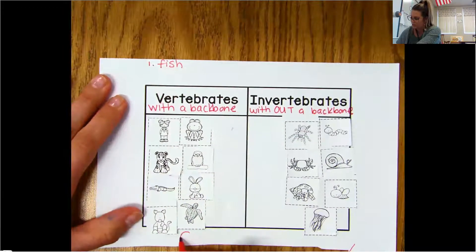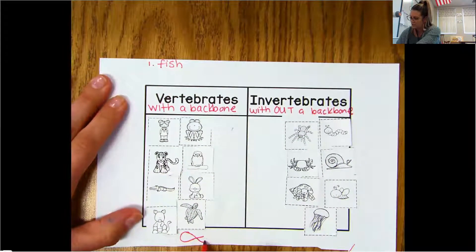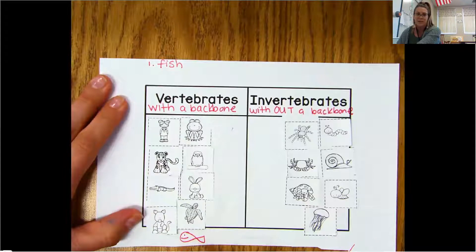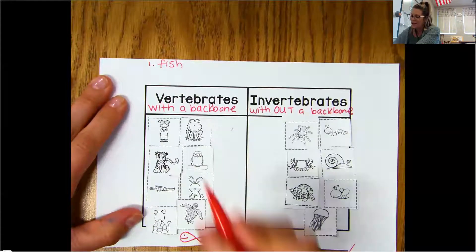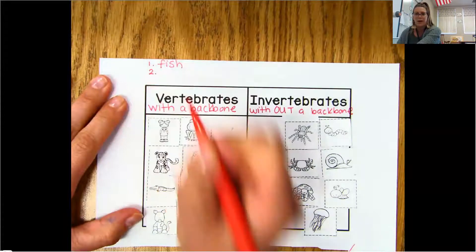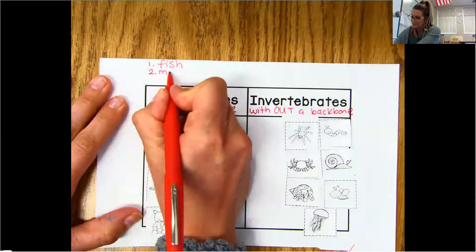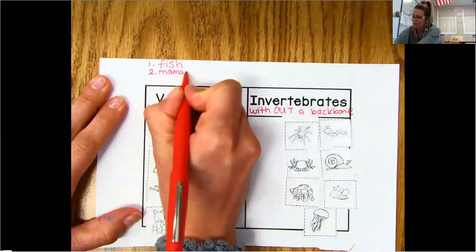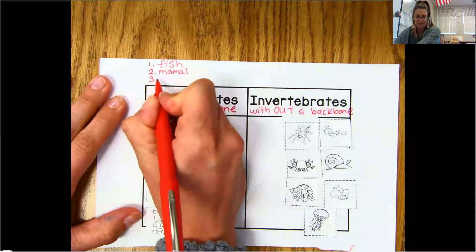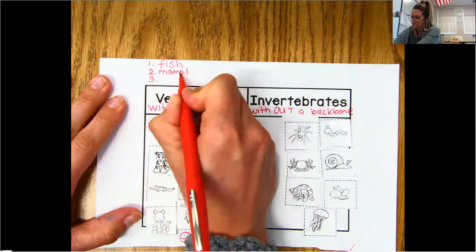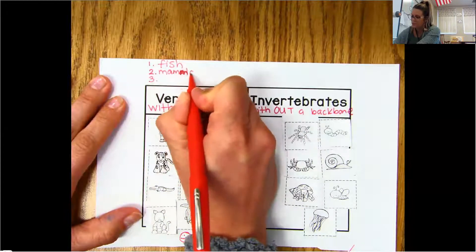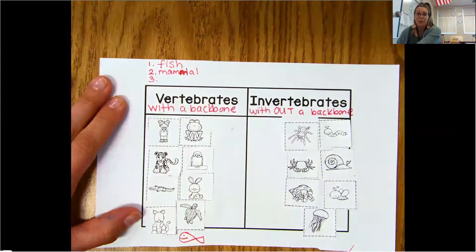So we want to go ahead and draw a fish. What is another one? What are we? A mammal, right? Got that other M. A mammal.